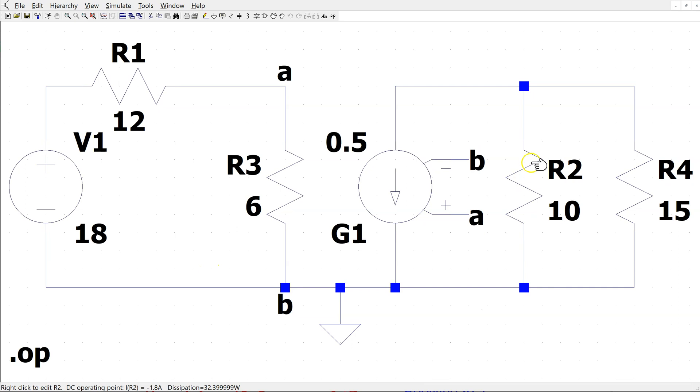we can see that the current I1 is minus 1.8 amps and the current I2 is minus 1.2 amps, which matches the calculated values.